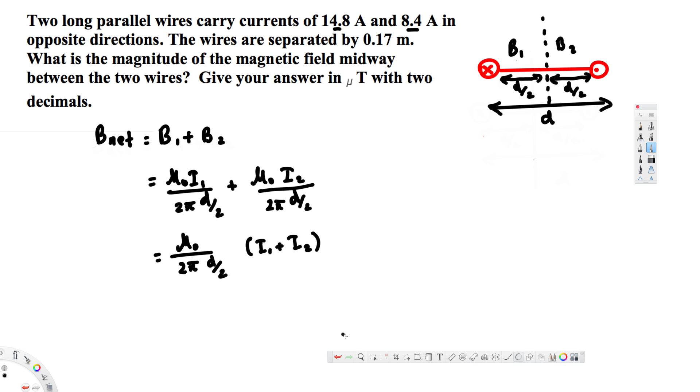Now let's go ahead and plug in the values. First we have the permeability constant, that is 4 pi times 10 to the power minus 7, divided by 2 pi. The total distance given is 0.17, and if you divide this by 2 that's going to give you 0.085. So this is multiplied by 0.085 times the addition of currents, that's going to be 14.8 amperes plus 8.4 amperes.